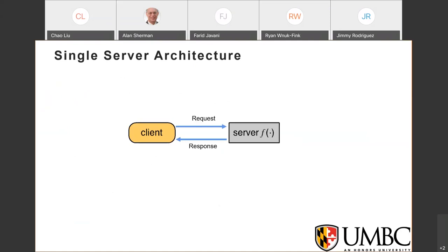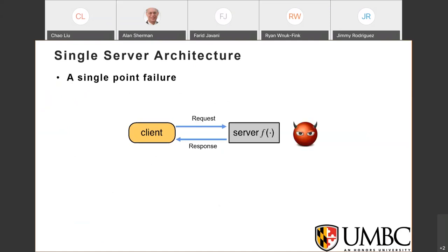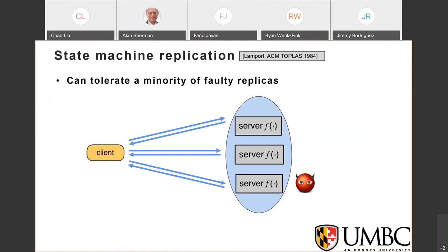We are considering a client-server architecture where the client invokes services to gather responses from the servers. What we are concerned about is compromise of those servers. In this example, a single point of failure remains. A classic method to deal with this problem is using state machine replication, proposed by Lamport in 1984. The basic idea is to replicate the service with multiple servers, so they collaborate in producing a response to the client even when a minority of the servers are faulty.